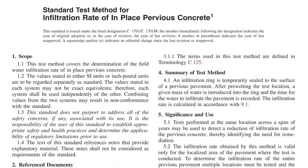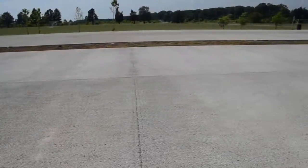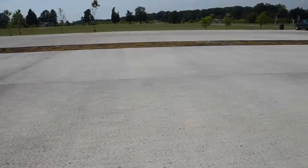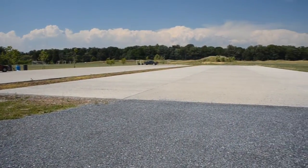ASTM C-1701 is the standard infiltration test for pervious concrete. We recommend that an infiltration test be performed at least annually in multiple locations to identify where and when maintenance might be needed.